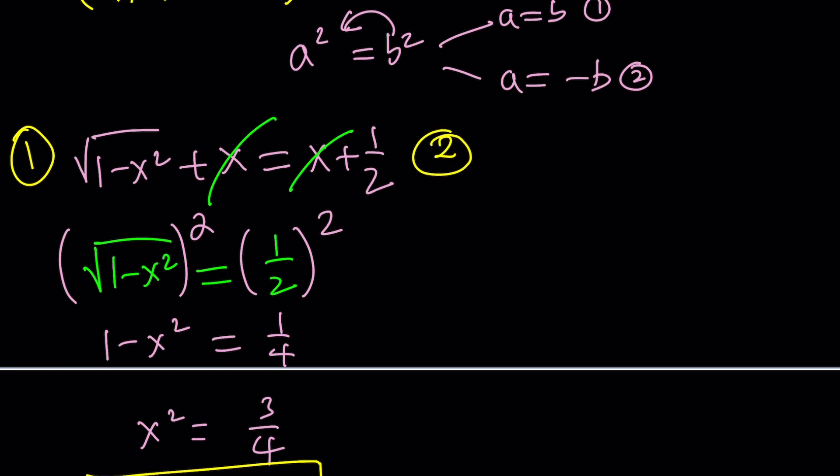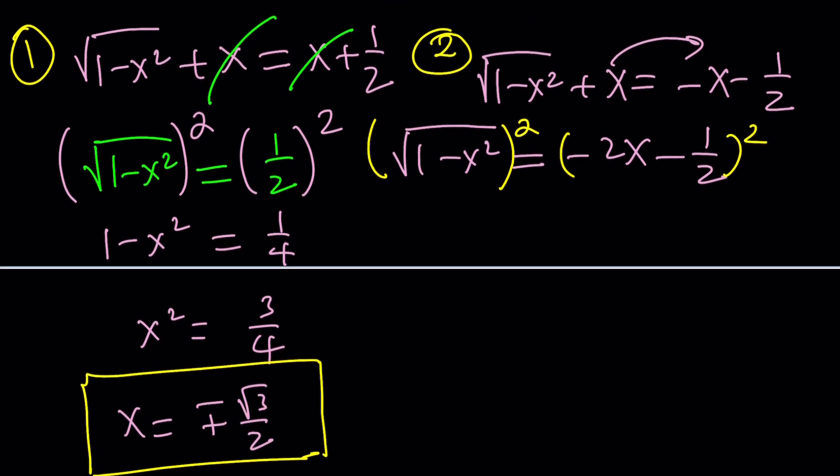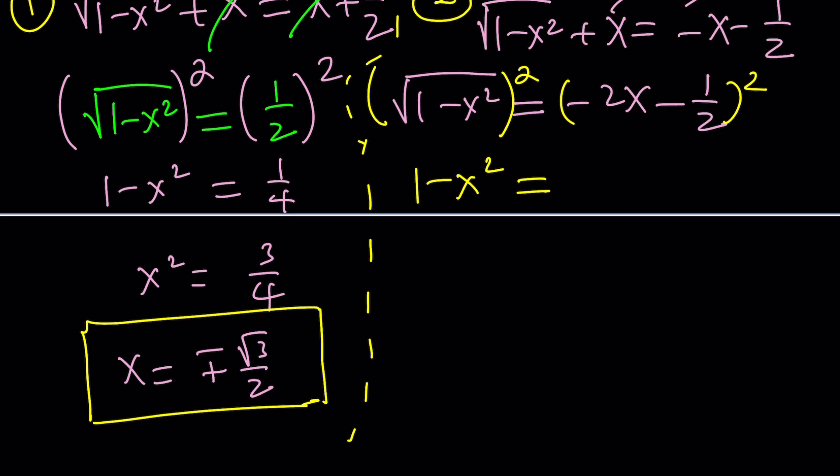Let's take a look at the second case. Second case is where this expression on the left equals the opposite of the expression on the right-hand side. You just negate it. Of course, x's do not cancel out, but that's okay. We can put the x on the other side. That becomes negative 2x minus 1 half, and again, we're going to square both sides. But this time, things aren't going to be super nice, but it's still going to be okay. You can think of this as 2x plus 1 half squared. 4x squared plus 2x plus 1 fourth.